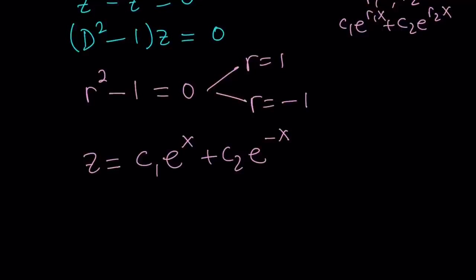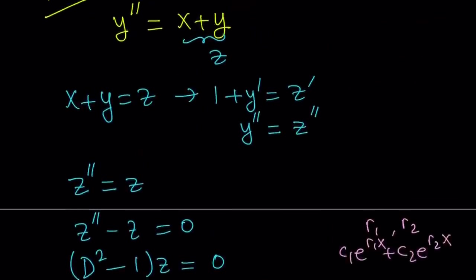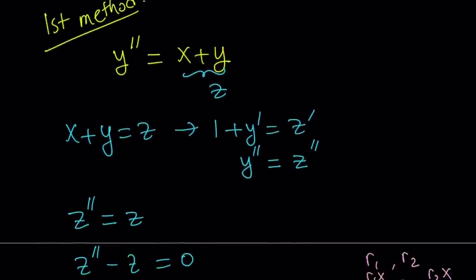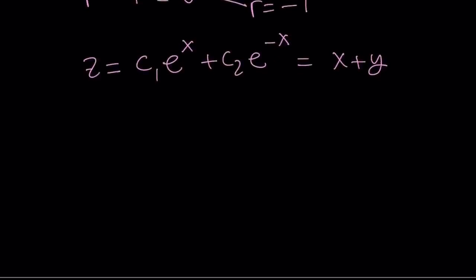That's the solution for z. I need to turn it into a solution for y, but we know that z equals x plus y — that's what we assumed at the beginning when we let z equal x plus y. So we isolate y, and y is going to be c1 e to the power x plus c2 e to the power negative x minus x. That is the solution to our equation.